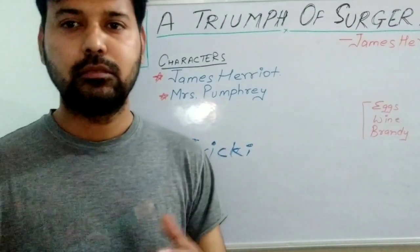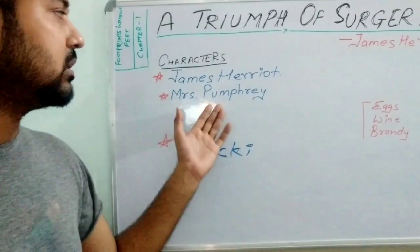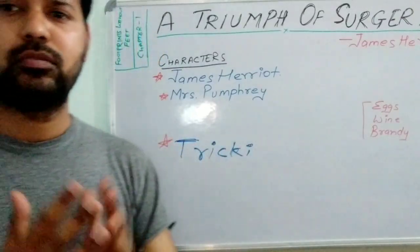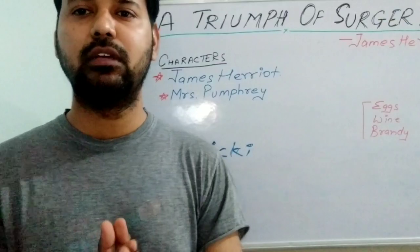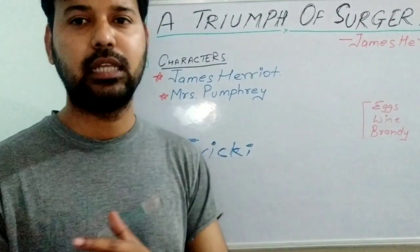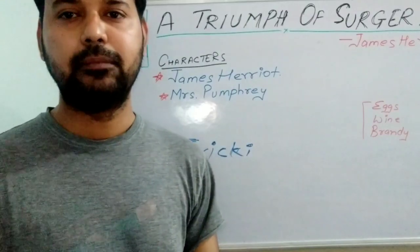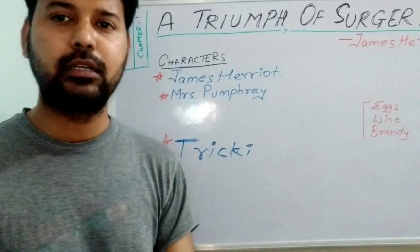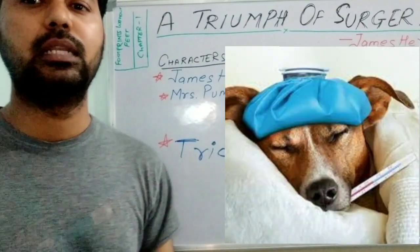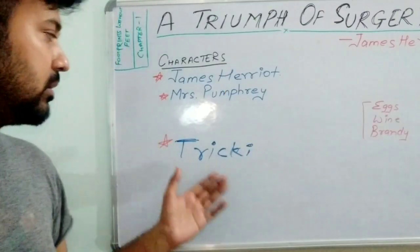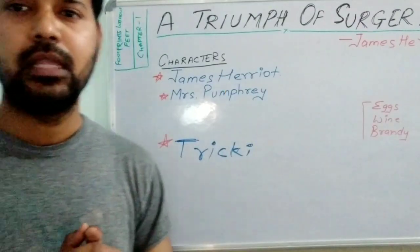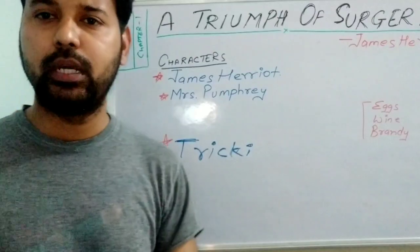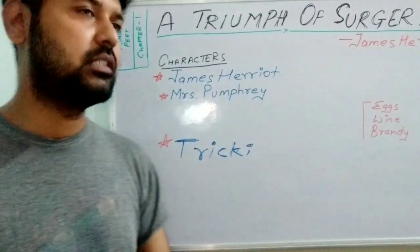Mrs. Pumphrey reluctantly followed the advice. James Herriot had been thinking that one day he would definitely get a call from her saying Tricky was seriously ill — and the same thing happened. Mrs. Pumphrey called James Herriot one day and told him that Tricky was not moving, had become even more lazy, and was doing continuous vomiting. This condition made Mrs. Pumphrey very worried, so she called the doctor and told him everything.